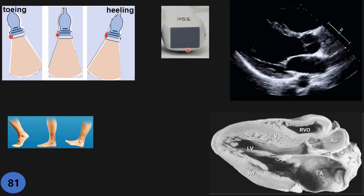The most important maneuver is heel-towing or rocking. Here we have the footprint of the probe — the vector, long axis, short axis, and marker. The marker side we call the toe, and the other side the heel — just like a foot. Towing means you tilt the handle of the probe toward the marker side, changing the direction of the sector. Heeling is the opposite. With this maneuver you can easily make any structure horizontal or vertical.